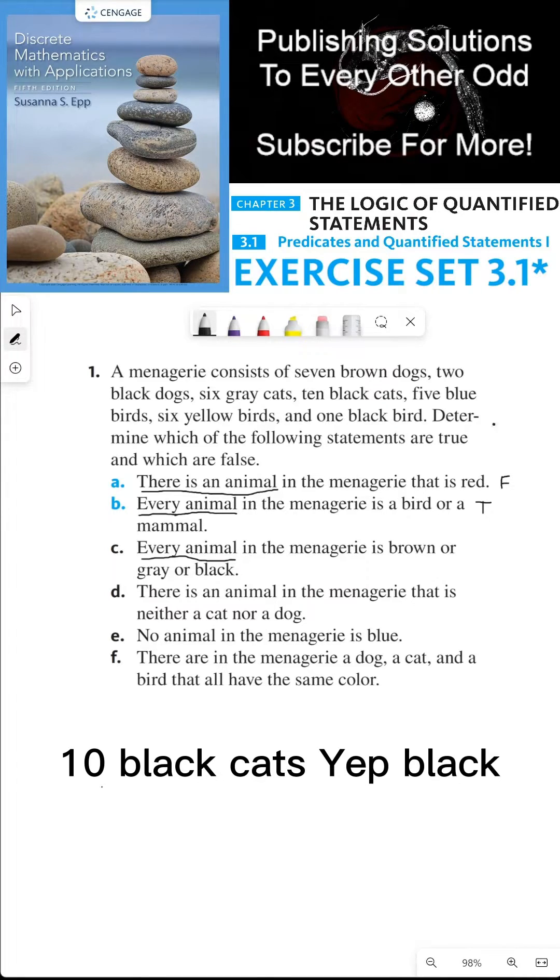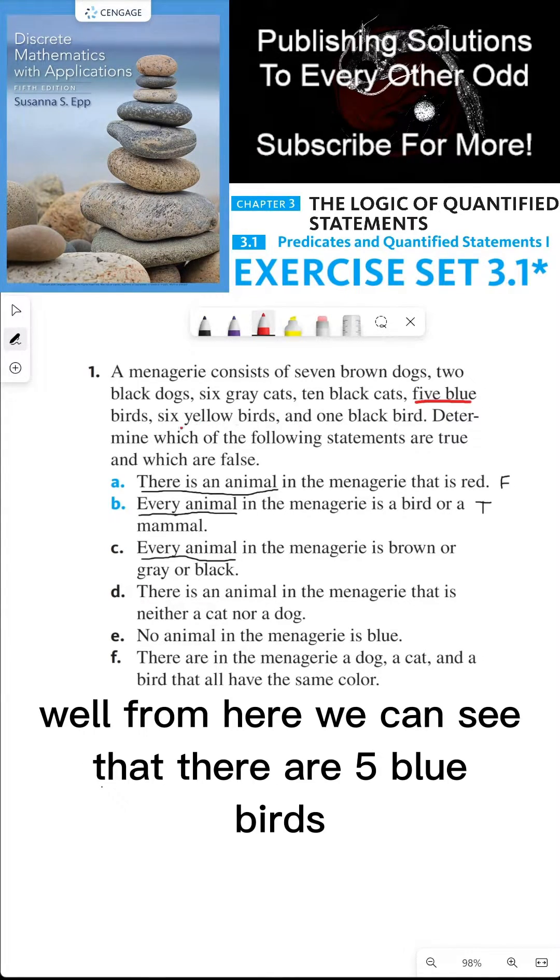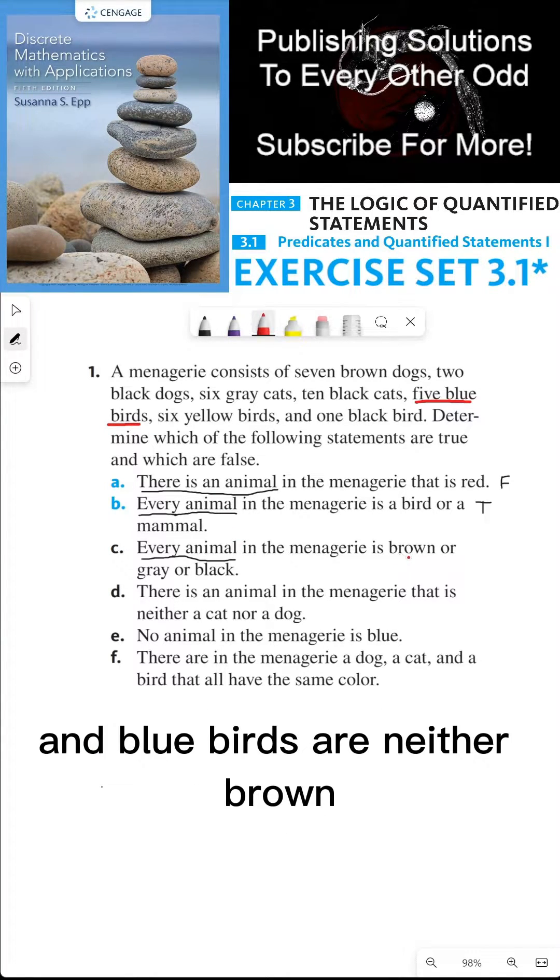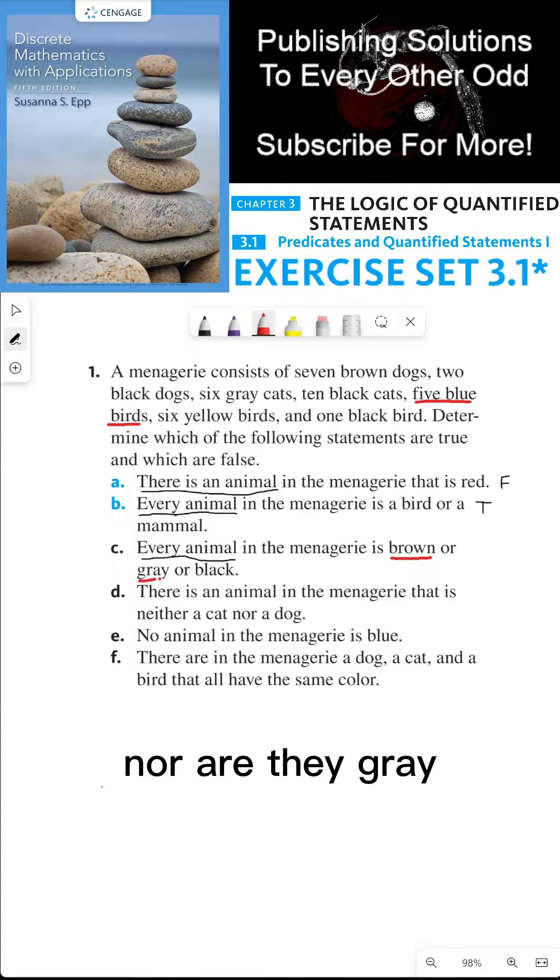Ten black cats, that's black. And five blue birds. From here we can see that there are five blue birds, and blue birds are neither brown nor gray nor black. So this is false.